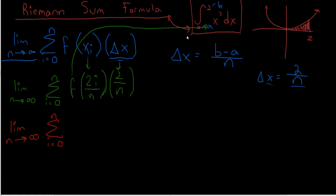We square the top, everything on the top is x squared. 4i squared, and we also square the bottom, n squared, times 2 over n.